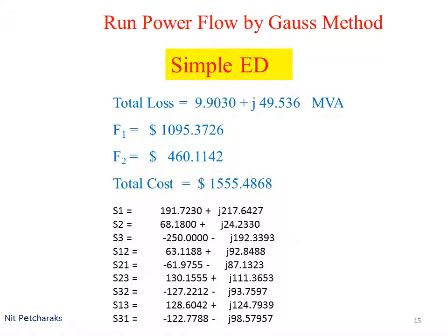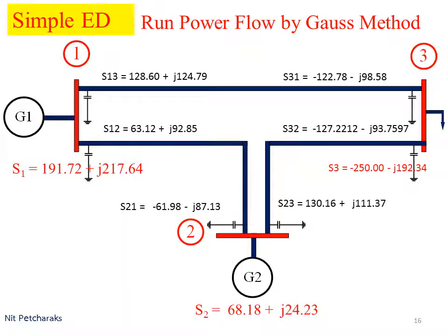Power flowing in each transmission line is calculated. It's better shown in picture. G1 supplies power from bus 1 to bus 3 directly, and G1 supplies power from bus 1 to bus 2 and continues to bus 3.